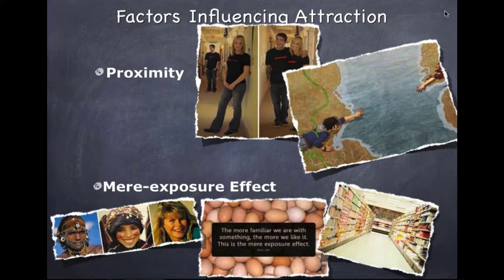Advertisers rely on the mere exposure effect to influence people about food, songs, clothing, and styles — the more exposure you have to these things, the more likely you are to like them. We tend to pick friends of the same age, gender, race, and socioeconomic class. We also tend to choose friends and lovers with similar views on things most important to us. Similar interests and attitudes towards leisure activities make time spent together more rewarding when people like what we like.